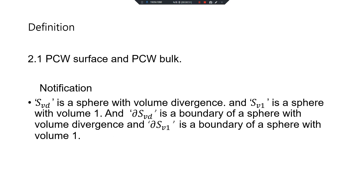PCW surface and PCW bulk. F3D is a sphere with volume divergence and SV1 is a sphere with volume 1. DS3D is a boundary of a sphere with volume divergence and DSV1 is a boundary of a sphere with volume 1.